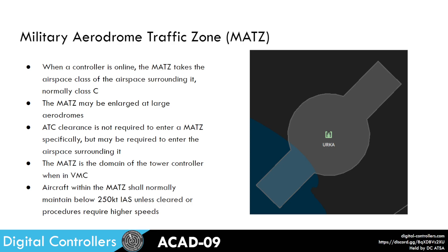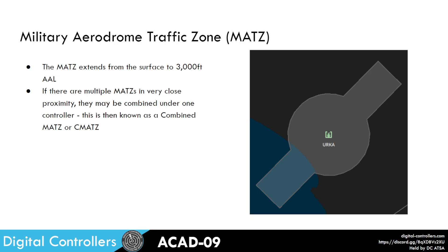ATC clearance is not required to enter a MAT specifically, but it may be required to enter the airspace surrounding it. The MAT is the domain of the tower controller when in VMC, and aircraft within the MAT should normally maintain below 250 knots indicated unless specifically cleared otherwise or procedures require higher speeds, such as the initial join which we will look at more in ACAD 10. The MAT extends in the shape shown on the right from the surface to 3000 feet, and if there are multiple MATs in very close proximity they may be combined under one controller, which we then call a combined MAT or CMAT.